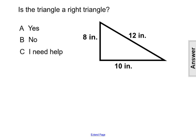We need to test if a squared plus b squared equals c squared, where a and b are the lengths of the shorter sides and c is the length of the longest side.